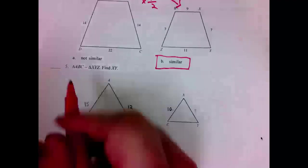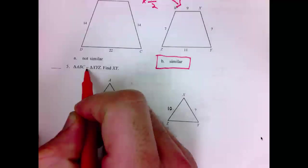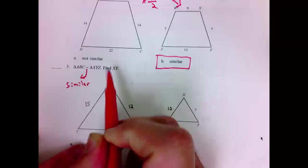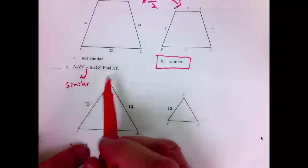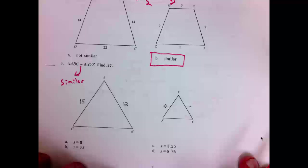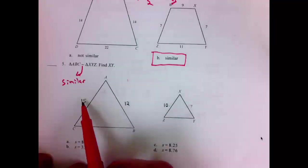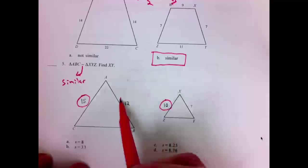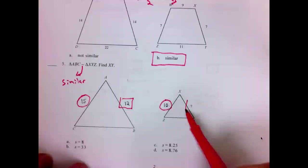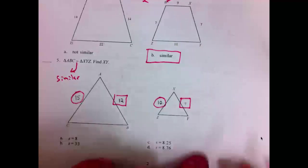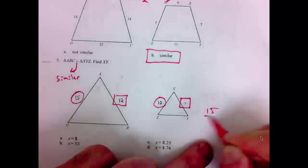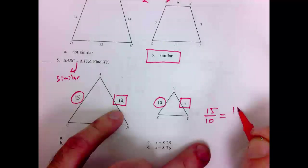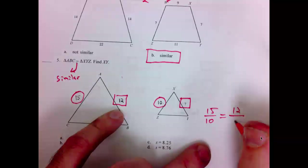Number 5. It says triangle ABC similar to triangle XYZ. Find XY. We're looking for the question mark. Well, we're going to set a proportion again. 15 corresponds with 10. 12 corresponds with question mark. I will make my proportion. 15 over 10 equals 12 over question mark. Changing question mark to the arbitrary variable X.